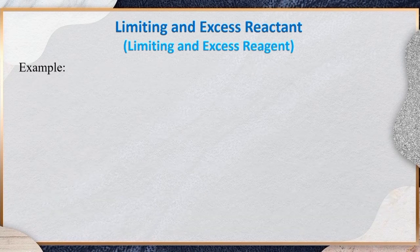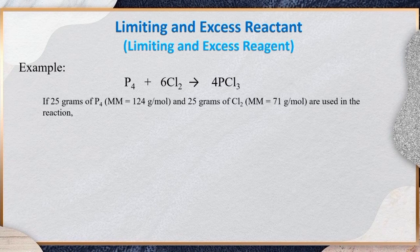Consider the production of phosphorus trichloride, or PCl₃. The balanced chemical equation is: P₄ + 6 mol Cl₂ → 4 mol PCl₃. If 25 g of P₄ with a molar mass of 124 g/mol and 25 g of Cl₂ with a molar mass of 71 g/mol are used in the reaction, identify which is the limiting and excess reagent.